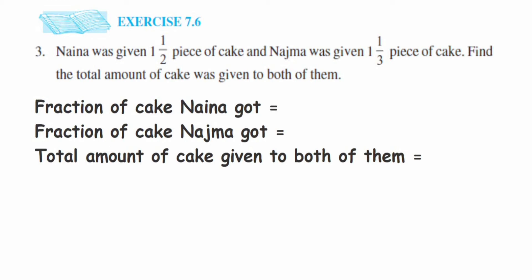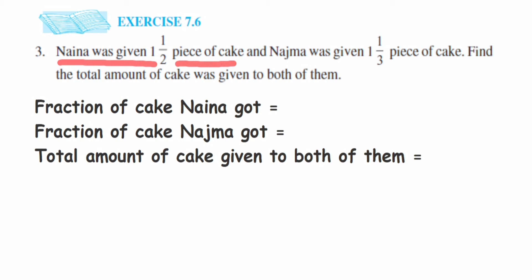Here's a question from exercise 7.6, the third question from the fraction chapter. The question is: Naina was given one and a half pieces of cake and Najima was given one and one-third pieces of cake. Find the total amount of cake given to both of them. We are given two fractions: the fraction of cake Naina got and the fraction of cake Najima got.